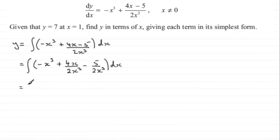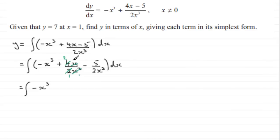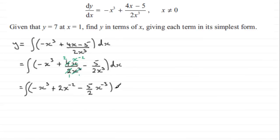Next, I'm going to tidy up before we integrate, because these two terms need to be prepared. For the first term, 2 into 2 goes 1, 2 into 4 goes twice, and x divided by x cubed — subtracting powers — gives 1 take away 3 equals minus 2. So we get 2x to the power minus 2. For the second term, we've got minus 5 over 2 multiplied by 1 over x cubed, and 1 over x cubed is the same as x to the power minus 3. All of this is integrated with respect to x.